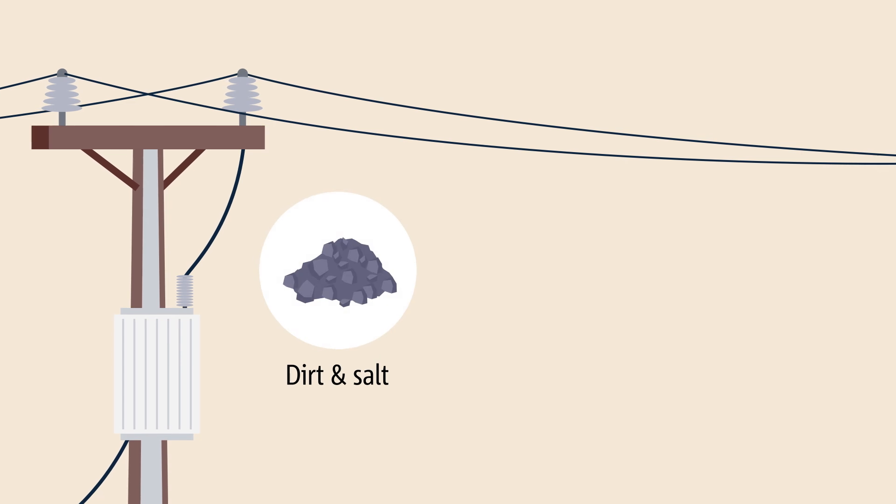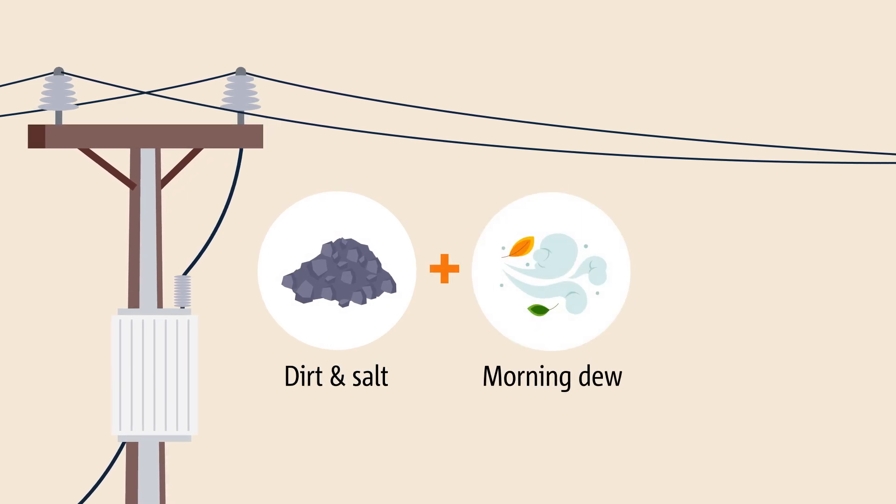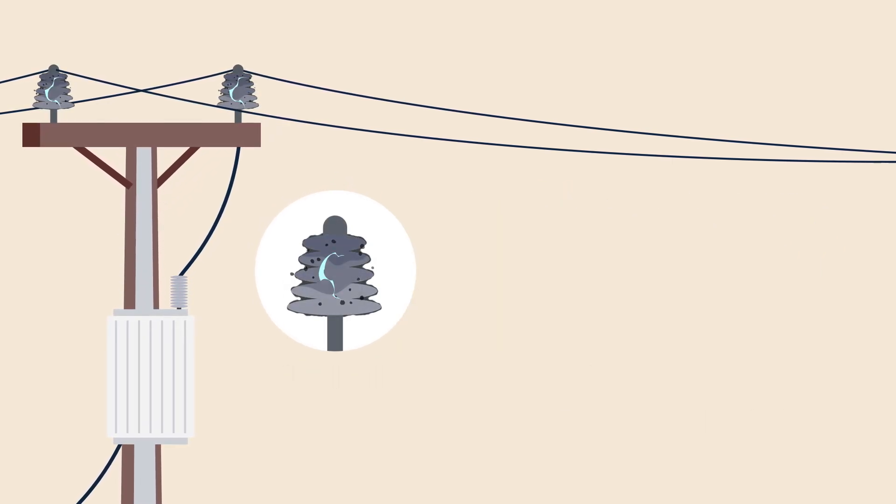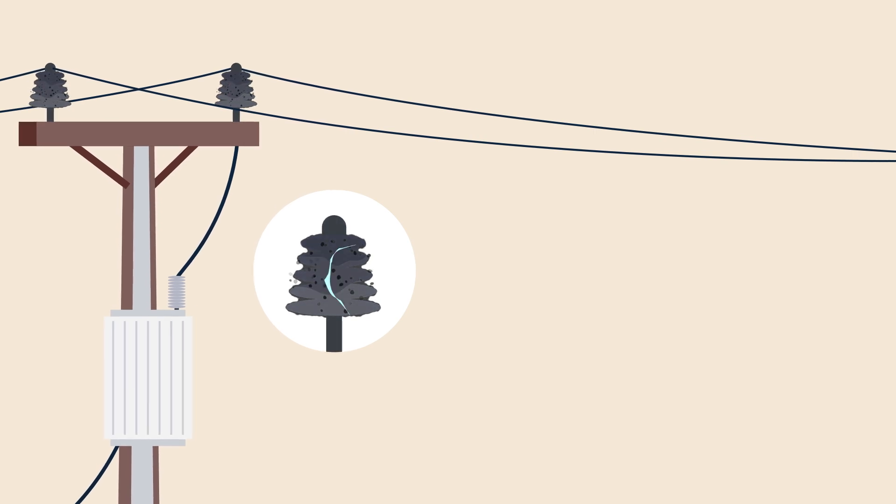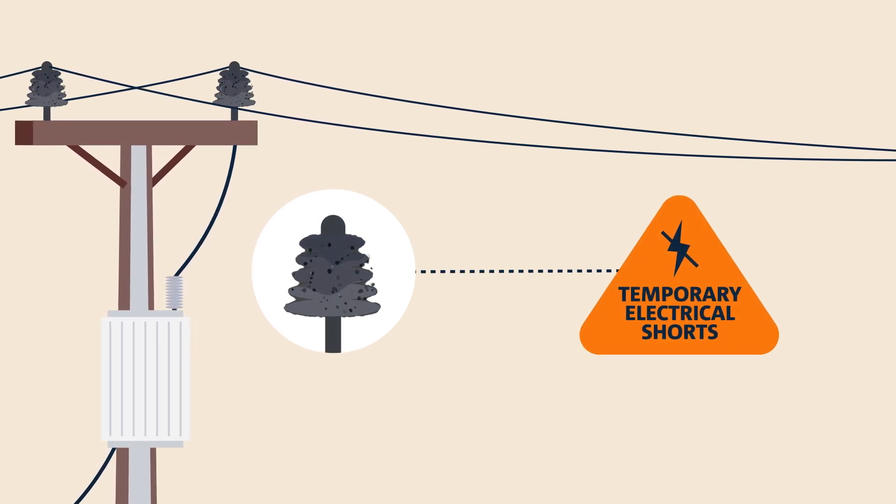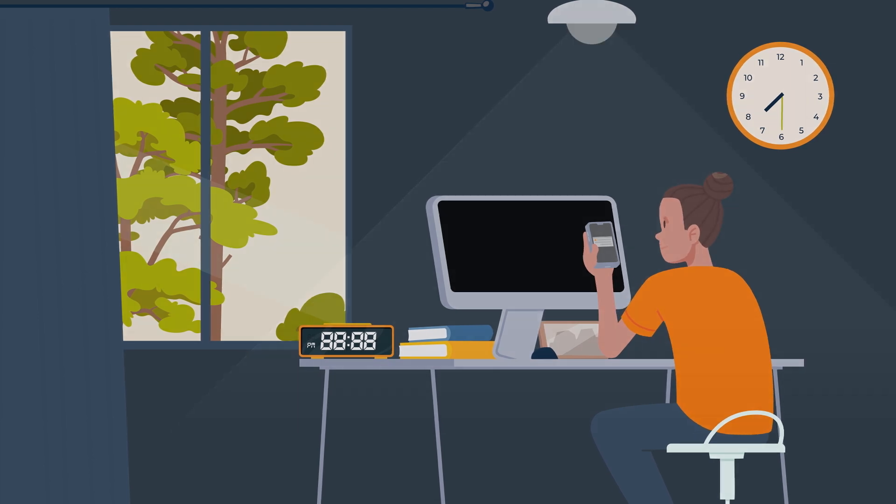This build-up of dirt and salt, combined with morning dew, mist or light rains, creates a conductive layer across the insulator's surface, which can lead to temporary electrical shorts, causing both temporary and prolonged power outages.